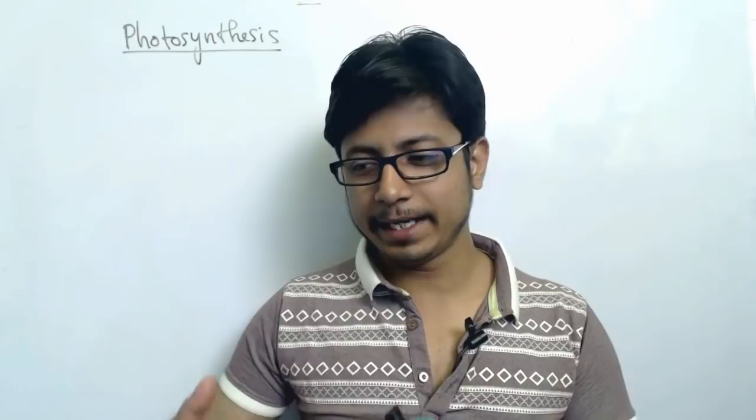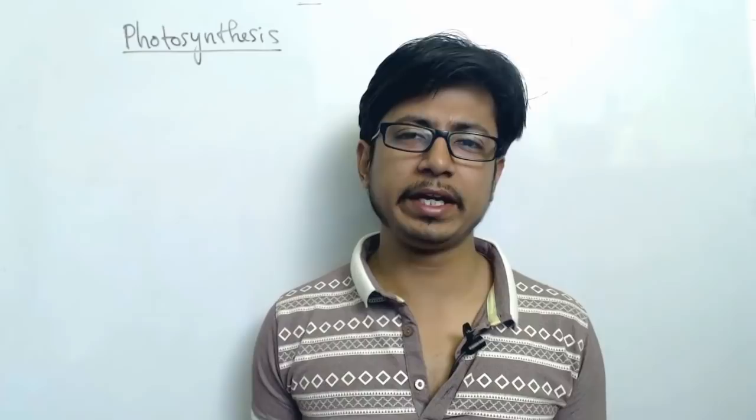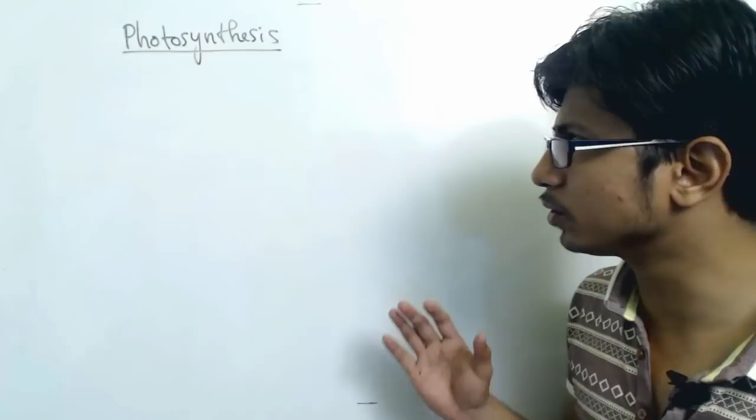Hello friends, welcome to another video tutorial from Shammu's Biology. In this series of videos we are going to talk about photosynthesis, which is one of the very important mechanisms in nature, with which food is produced. Food in the sense of simple sugars are produced by plants and all other organisms who have chlorophyll in their body.